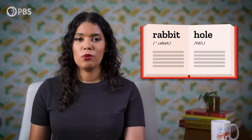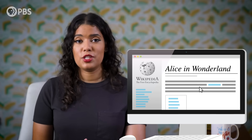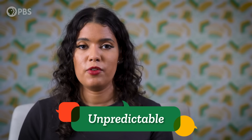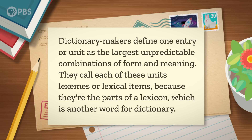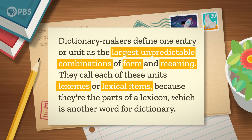To a linguist, the word 'word' has a big meaning and a small meaning. The big meaning of word is what we expect when we're looking something up in a dictionary. We'd expect to find a dictionary entry for rabbit hole, because this phrase has a meaning that we can't figure out from the definitions of its individual parts. After looking up rabbit and hole, we wouldn't guess that rabbit hole means a place where a rabbit lives, or a complicated or absorbing situation, like finding yourself down a Wikipedia rabbit hole at 2 a.m. after googling what languages are spoken on the International Space Station. Its meaning is relatively unpredictable from its parts. Dictionary makers define one entry or unit as the largest unpredictable combinations of form and meaning. They call each of these units lexemes, or lexical items, because they're parts of a lexicon, which is another word for dictionary.